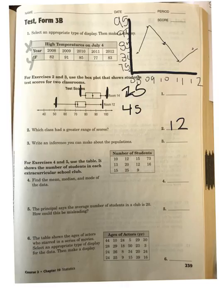Number 3 wants you to write an inference you can make about the populations. If you look at their medians, you can see room 14 has a median of around 87, where room 12 has a median of around 72. Therefore, you can make an inference that room 14 did better on the test than room 12.